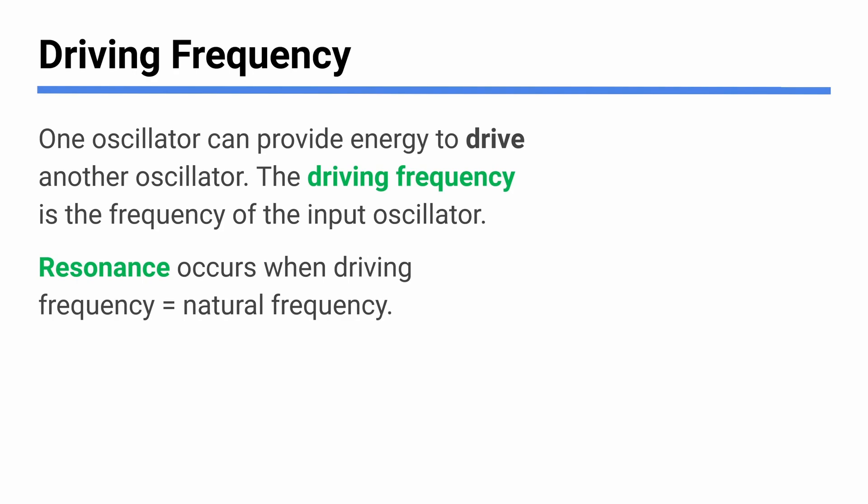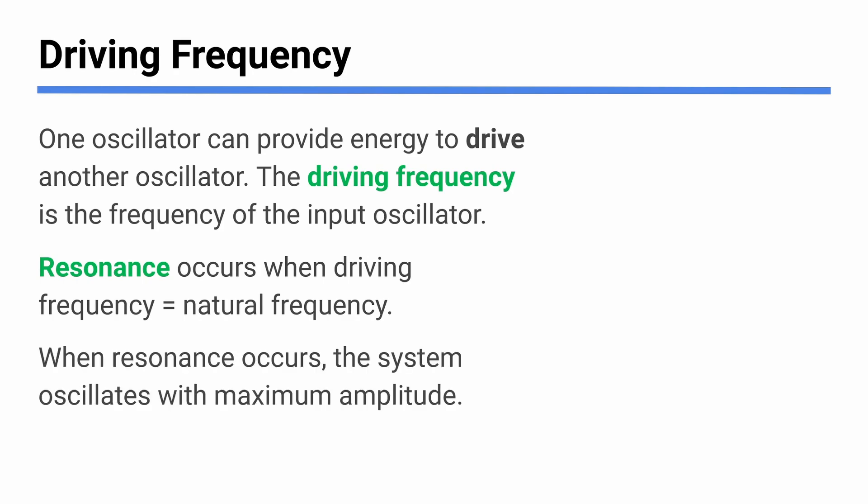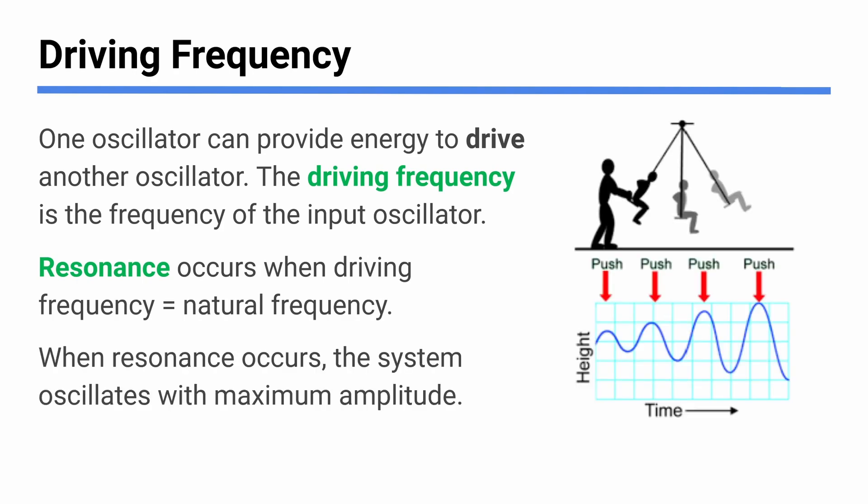So if you try to vibrate that pendulum at the exact same frequency it likes to vibrate at, it's going to oscillate a whole lot back and forth. What happens is when there's resonance, you have the maximum amplitude in motion.